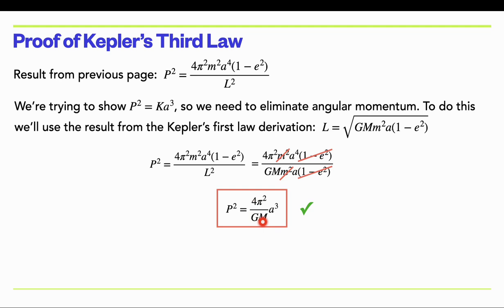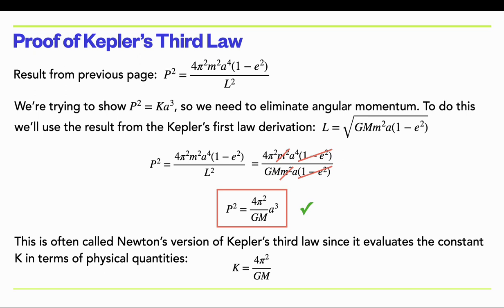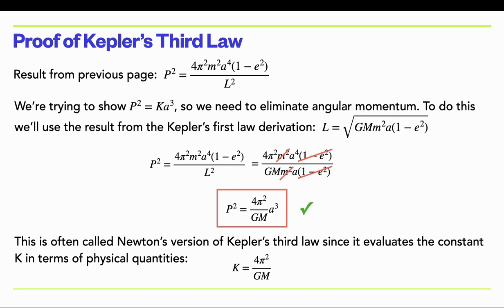We also now have a way of evaluating the constant K in Kepler's original version: K = 4π²/(GM). So K depends inversely on the mass of the central object — consistent with what we saw on the log-log graph earlier, where K depended on the mass of the central object.